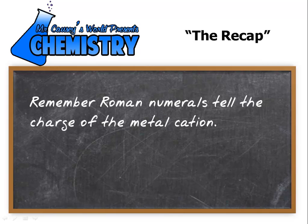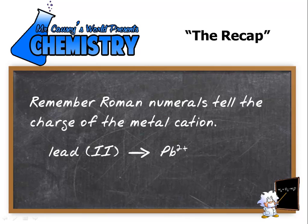Let's recap. Remember, Roman numerals tell the charge of the metal cation. So lead two would mean Pb2+. And by the way, notice I said cation—that's a positive ion.